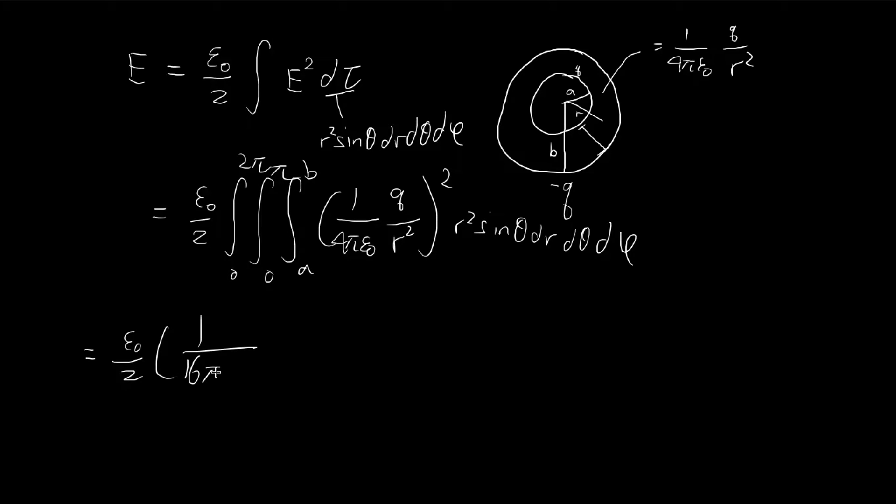Let's try to pull out the constants first. So let's have a q squared. And essentially we have a rather simple integral: sine theta, dr, d theta, d phi. Solving this integral is pretty straightforward.